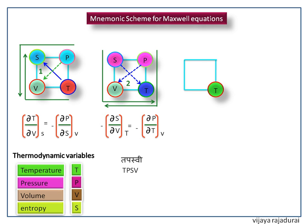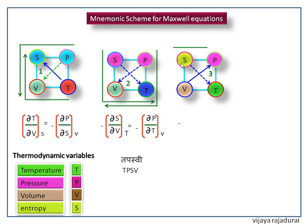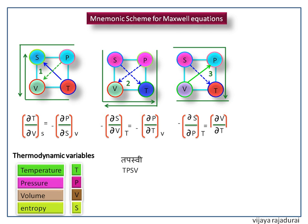Next we write the third Maxwell equation. Here we are going to consider the right side of the square marked as 3. Draw a diagonal towards 3. This diagonal starts from S to T via P. This is downward direction so put a negative sign — partial derivative of S with respect to P at constant T is equal to. The other diagonal is in the upward direction so we get a positive sign — partial derivative of V with respect to T at constant P.